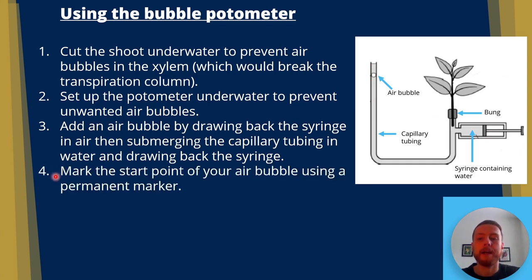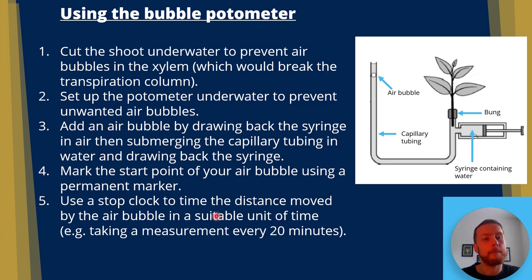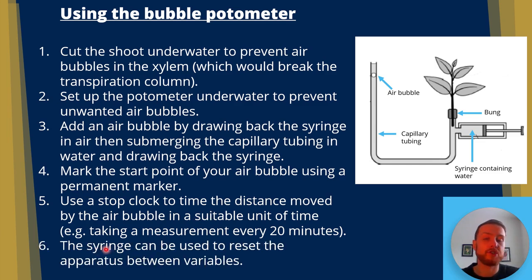We mark the start point of the air bubble using a permanent marker, then use a stop clock to time the distance moved by the bubble over a suitable period — something like 20 or 30 minutes, since measuring every 30 seconds would not be appropriate. The syringe can be used to reset the apparatus between variables by pushing the plunger in, increasing pressure in the tubing and pushing the bubble back to the start point.